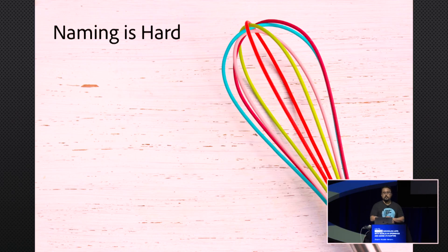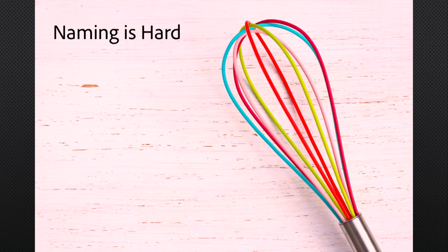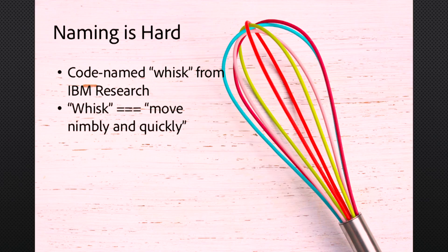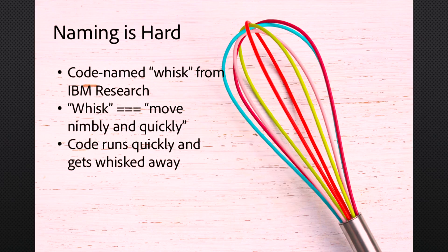A little bit of trivia about OpenWhisk. It was codenamed Whisk from IBM Research. Whisk means to move nimbly and quickly, and the code runs quickly and whisks away. That's essentially what serverless is in the OpenWhisk context — it runs a Docker container and it quickly goes away. It was also chosen for an easy three-letter CLI. And of course, 'open' means open source in OpenWhisk.